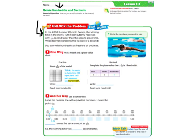So let's read the problem. In the 2008 Summer Olympic Games, the winning time in the men's 100-meter butterfly race was only one one-hundredth of a second faster than the second place time. What decimal represents that fraction of a second? So in other words, how do we write one one-hundredth as a decimal?